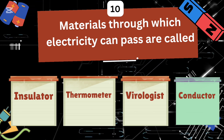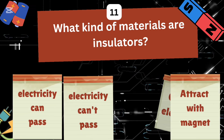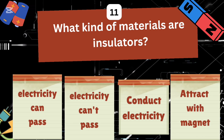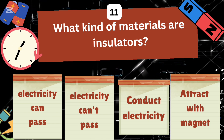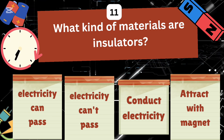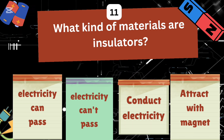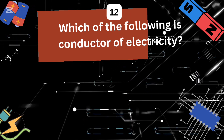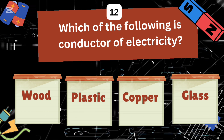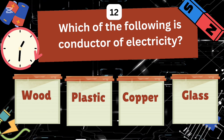Materials through which electricity can pass are called conductors. What kind of materials are insulators? Electricity cannot pass through insulators. Which of the following is a conductor of electricity: wood, plastic, copper, or glass?